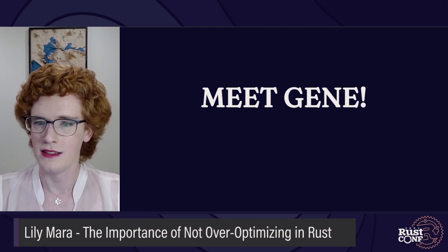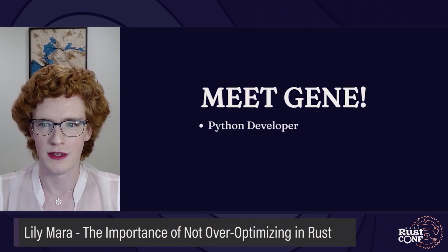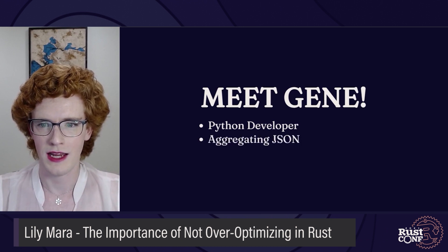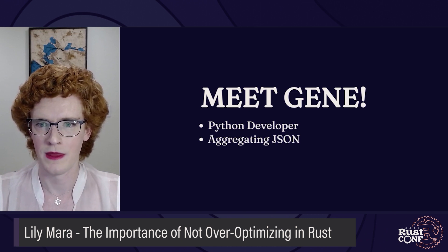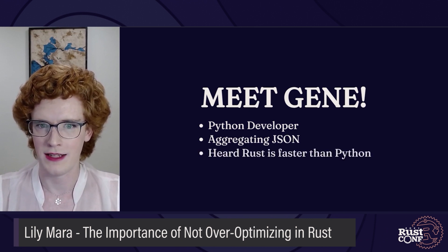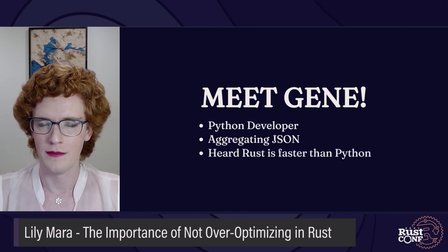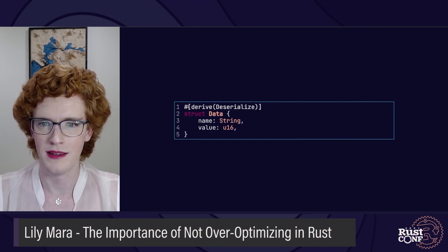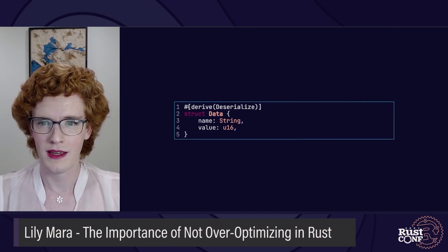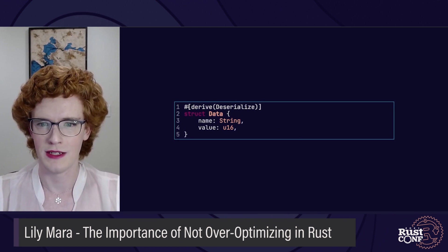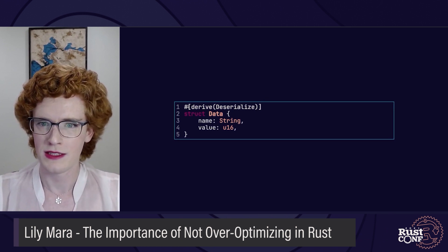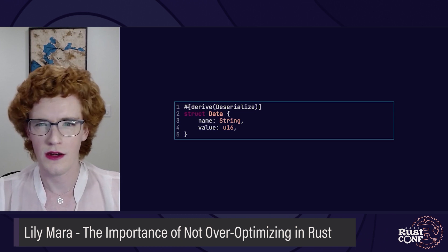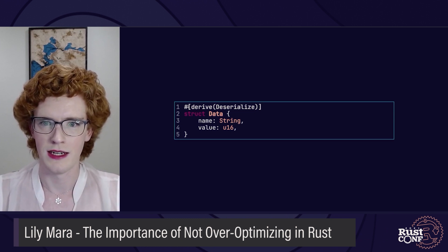Meet Gene. Gene is a Python developer who's been writing software for several years. They're working on some JSON aggregation code in Python, and they've noticed that it's a performance bottleneck for their application. They've heard that Rust is very fast, so they decide to investigate moving it into Rust. They find the Serde crate, which allows them to parse the JSON into easy-to-manage structs, and they're happy. The code seems pretty quick, and they proudly show it off to a more experienced Rust developer. The experienced developer tells Gene that the code is okay, but it has some unnecessary allocations in it.